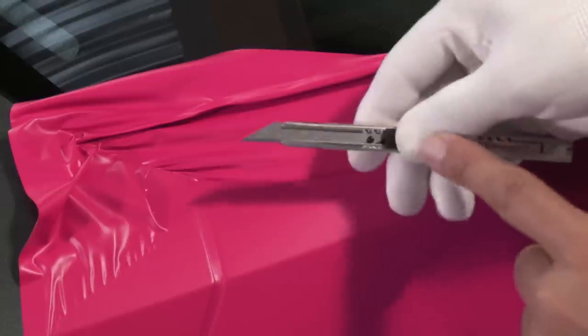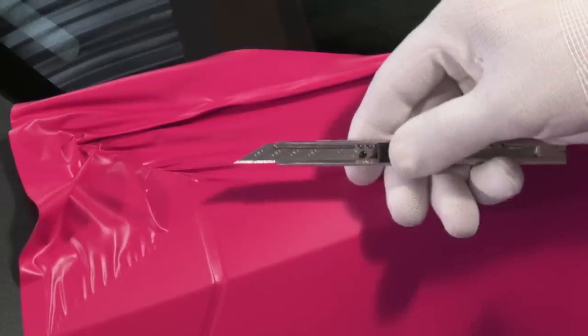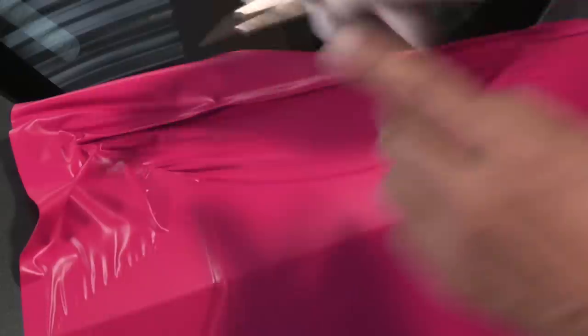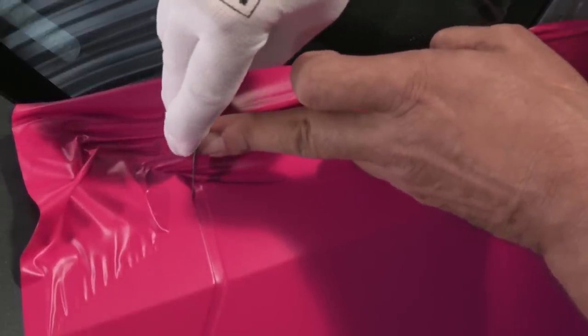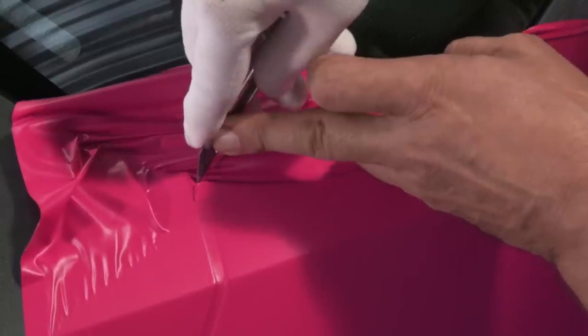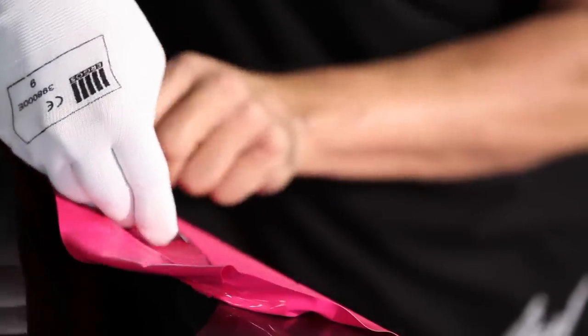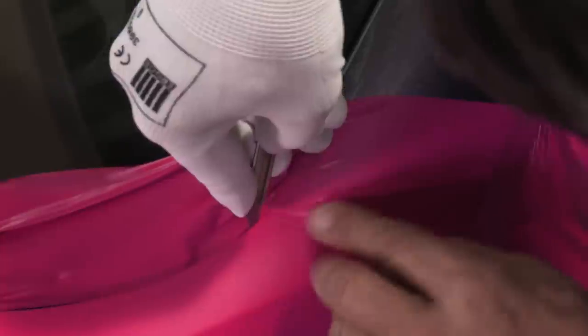For this cut, we're going to use a 30 degree blade. We start under the bonnet. We go around the corner and come back with the blade inclined towards the outside.